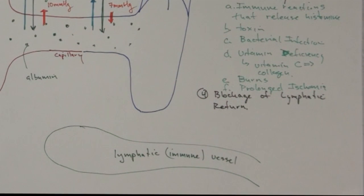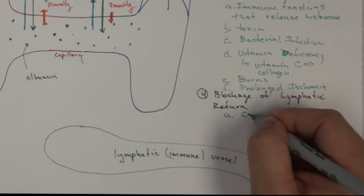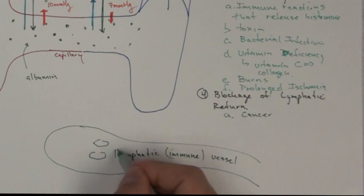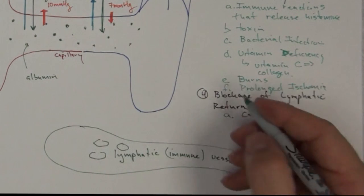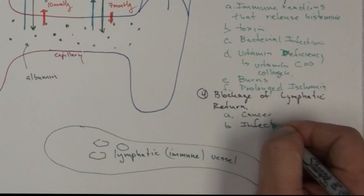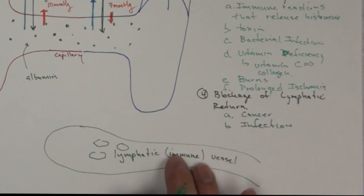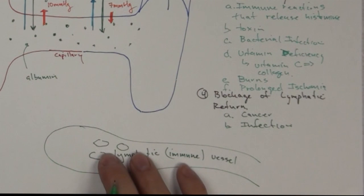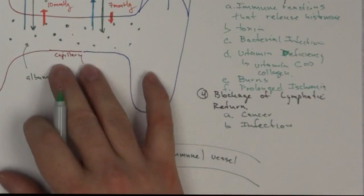Blockage of lymphatic return is the final mechanism. Cancer — such as Hodgkin's or non-Hodgkin's disease — fills lymph nodes with cancer cells, impeding fluid flow and causing edema. Infection also matters because the lymphatic system is home to the immune system; infection draws in white blood cells and additional fluid, preventing outflow of lymphatic fluid and causing it to back up and produce edema.